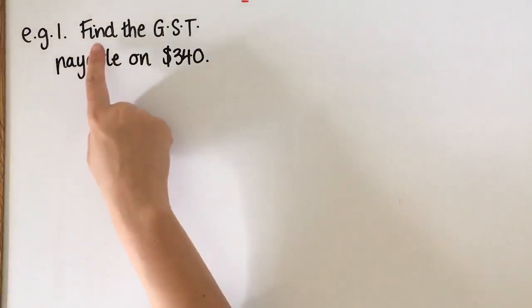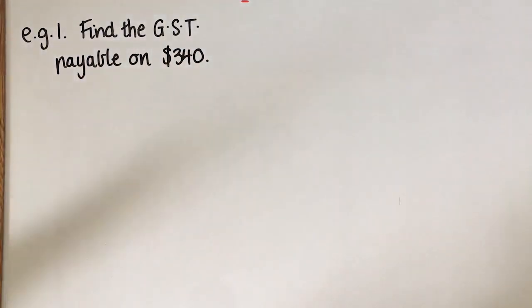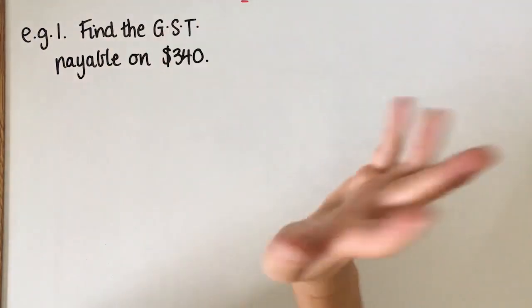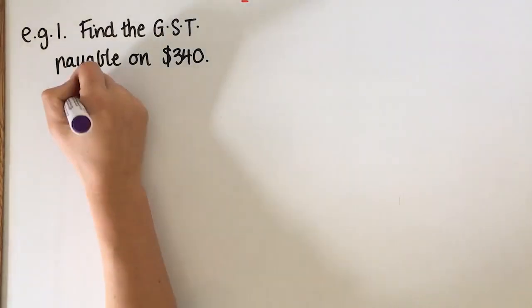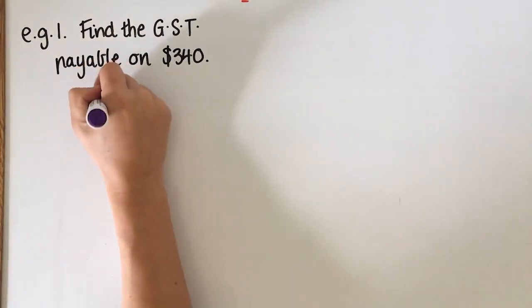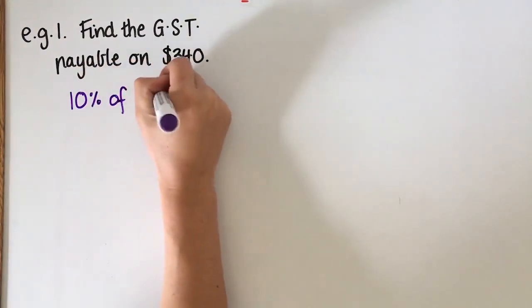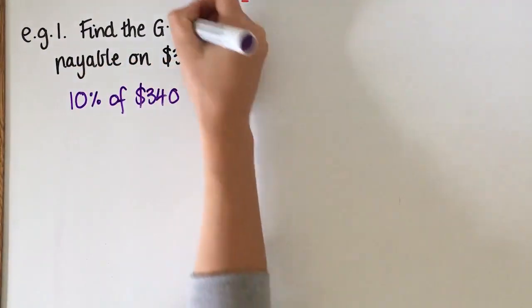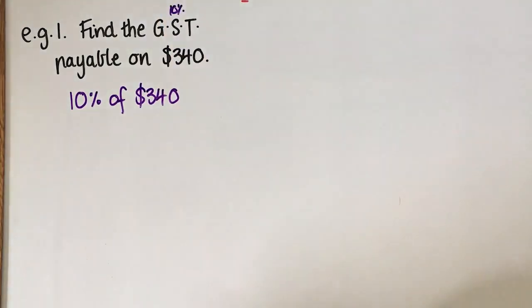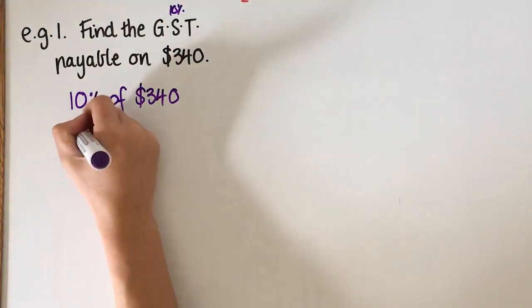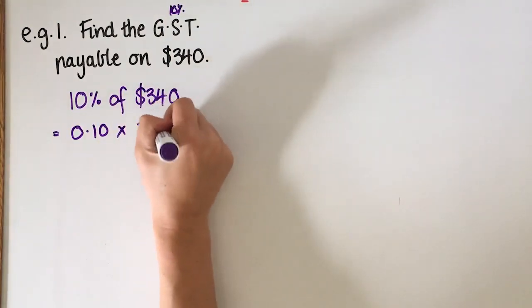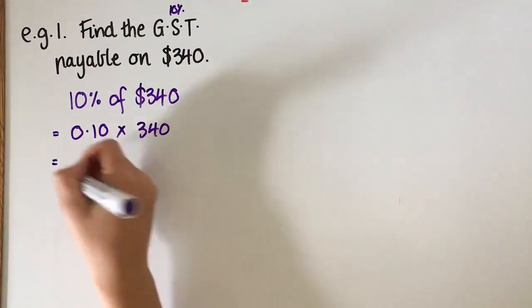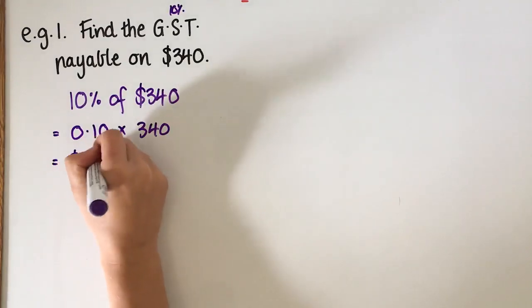All right, so this first example is asking to find the GST payable on something that costs $340. So let's just say it was like a stereo or something like that that cost $340. So what we need to do is we need to find 10% of $340. Now as I said, GST is always going to be 10% in Australia. So 0.10 times $340. You can do that on your calculator if you like, but I know that that's $34.